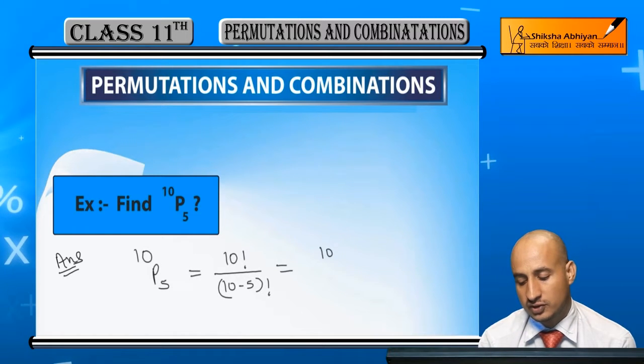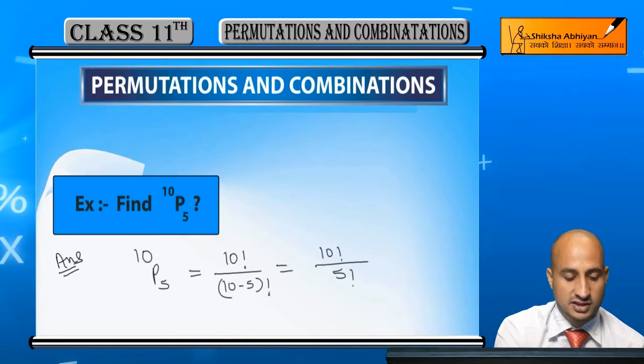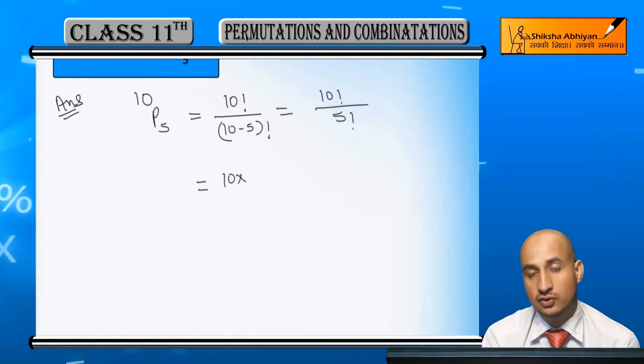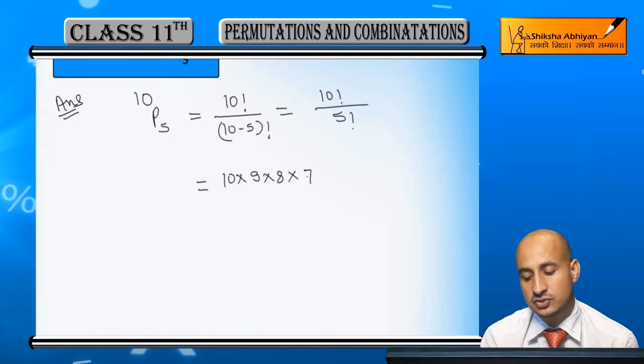This will come out to 10 factorial upon n minus 5 factorial. Further, when you solve this, this will come out to 10 factorial, which will be 10 into 9 into 8 into 7 into 6.